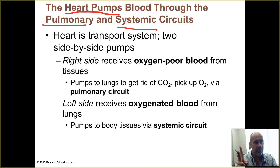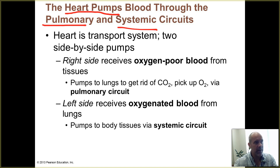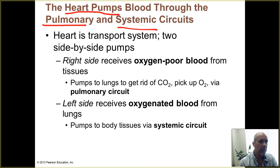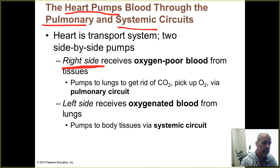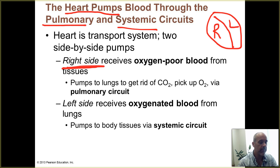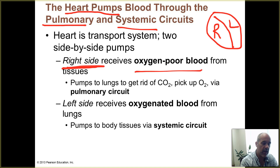As your heart is beating, it is sending blood out to the lungs and also out to all of your body systems, and at the same time it's also receiving blood back from those locations. So your heart basically functions as two side-by-side pumps. Over on the anatomical right side of the heart, it's divided into a left side and a right side, and over on the right side you've got oxygen-poor blood coming back from your tissues.